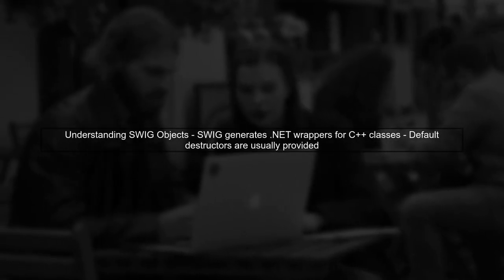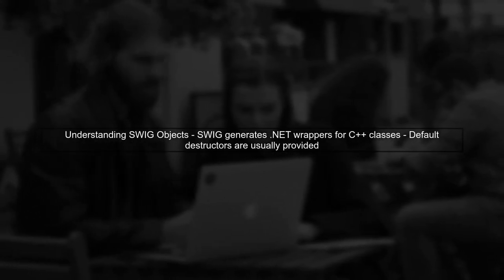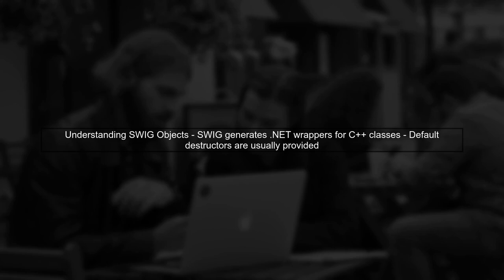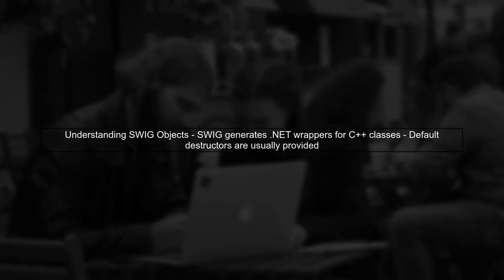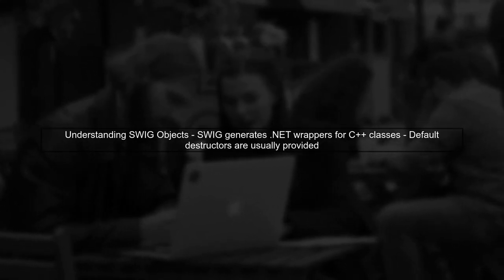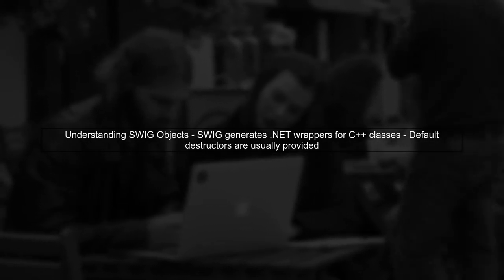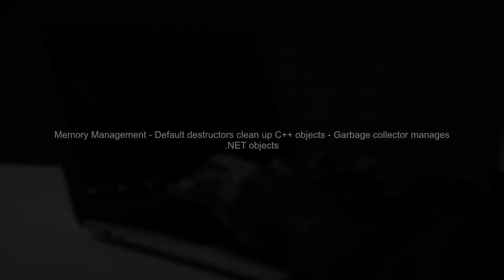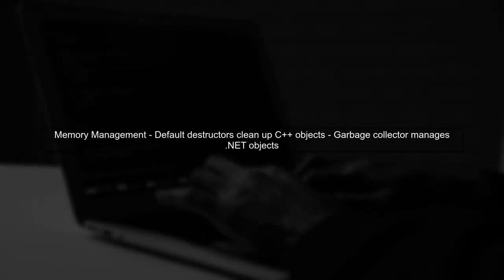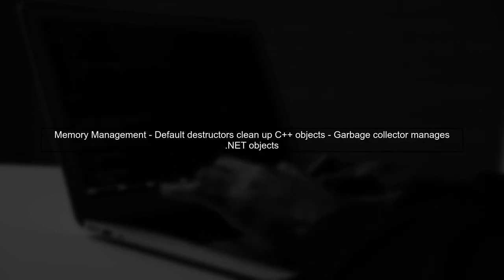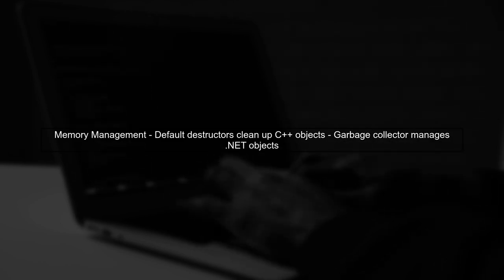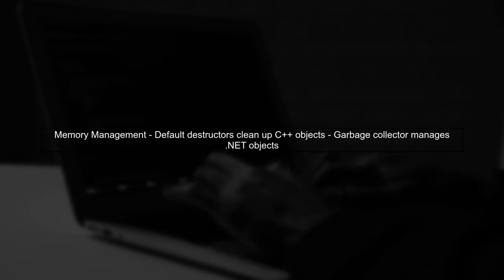When using SWIG-generated objects in .NET, it's important to understand how memory management works. SWIG typically generates wrappers around C++ classes, and these wrappers often have default destructors. In most cases, these destructors will handle the cleanup of the underlying C++ objects. This means that you may not need to explicitly dispose of these objects, as the garbage collector in .NET can manage them.